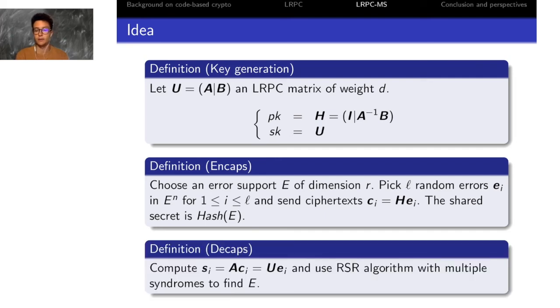For the decapsulation, the receivers can compute the syndromes of all the splits of the ciphertext, this time with the matrix U as the parity check matrix, and the receiver can use the RSR algorithm with multiple syndromes to find E.